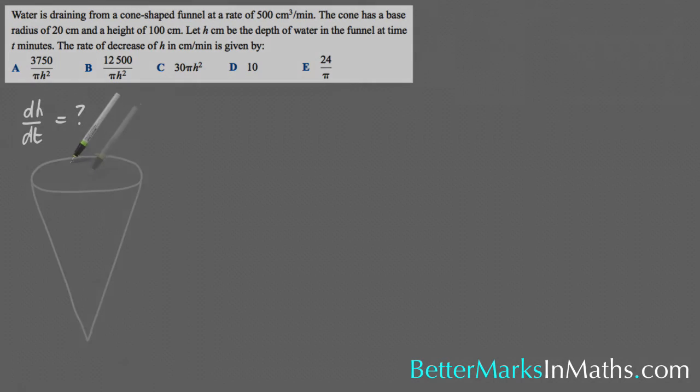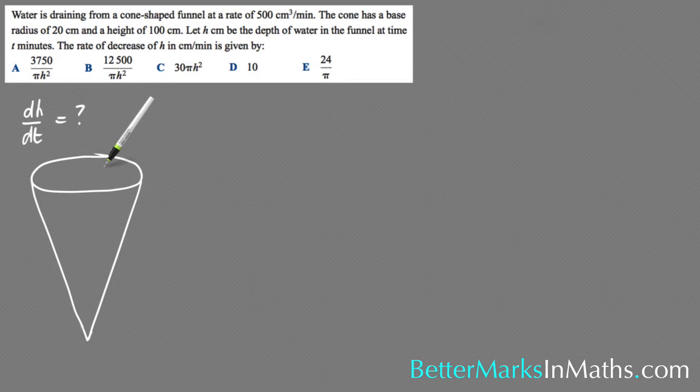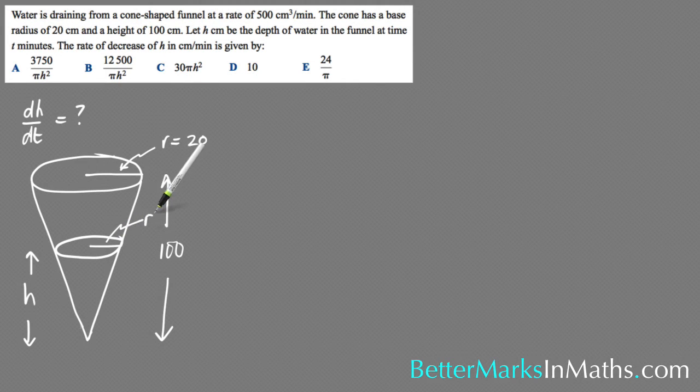So I'll start by drawing the funnel like such, and it has a radius of 20 and a height of 100 like that. And it also says let h centimeters be the depth of water in the funnel at time t minutes. So I need to set up an arbitrary water level in here with those two variables in it. So there's the arbitrary water level with a radius of r and a height of h.